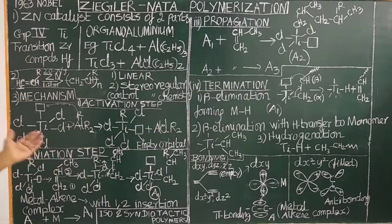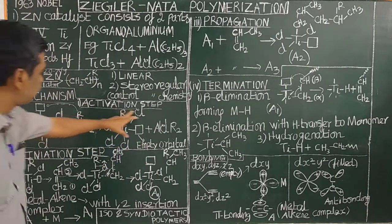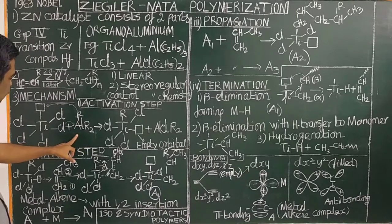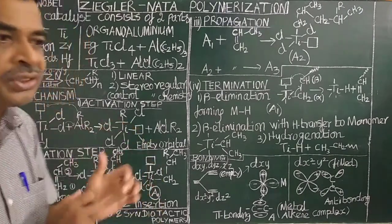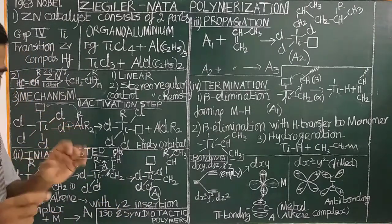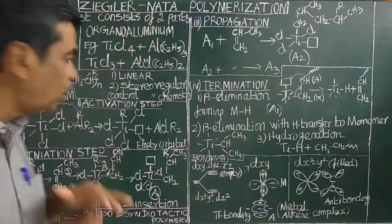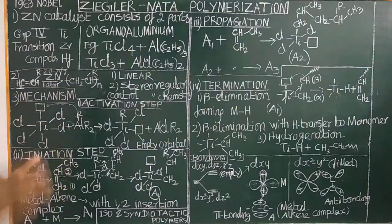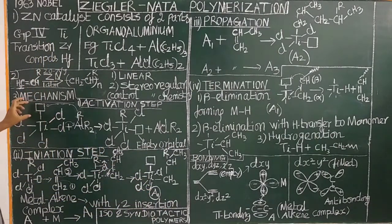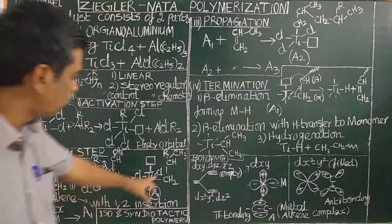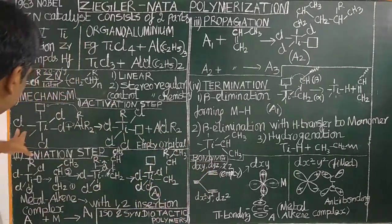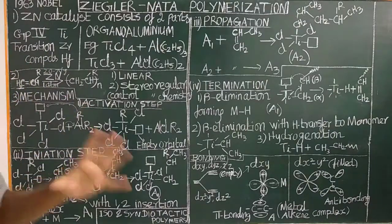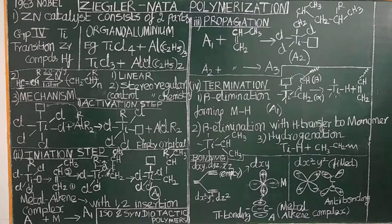The first step is the activation step. When triethyl aluminium comes into contact with titanium tetrachloride — in the crystalline state, titanium is coordinated by 6 chlorine atoms — on the surface, titanium tetrachloride is surrounded by only 4 chlorine atoms and has one empty orbital, a d-orbital. This empty orbital is responsible for the catalytic property.